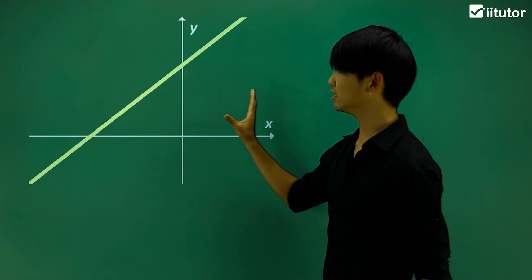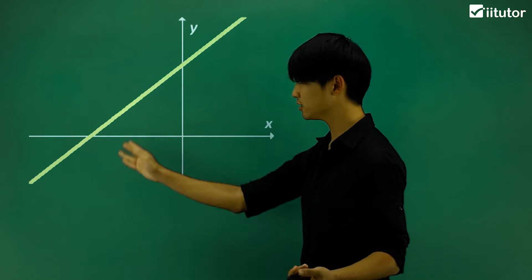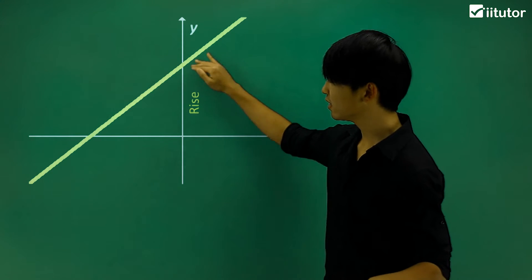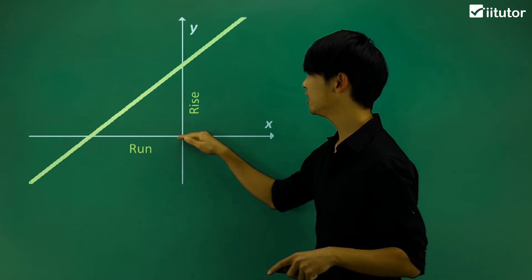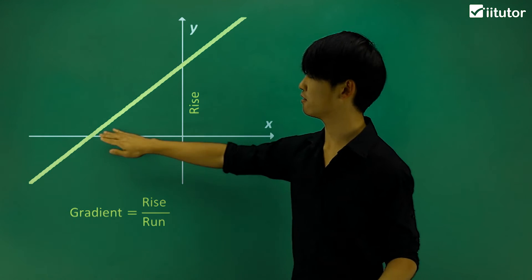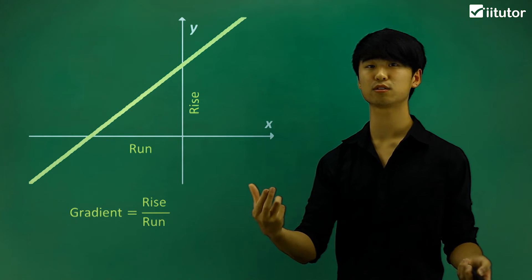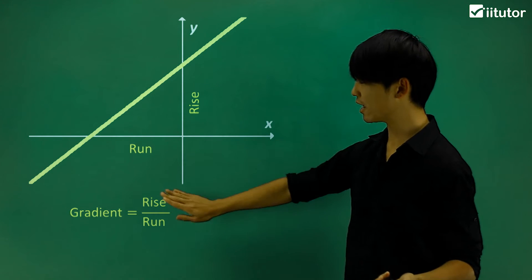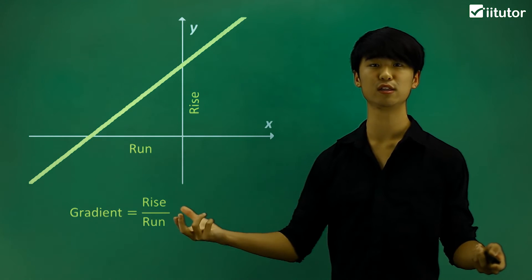Now what I'm going to do is find out the value of the gradient. If we're given some line like this, I'm going to look at the little rise up here and a little run on the side here — so run and rise. The gradient is the rise over the run. So gradient equals rise over run.